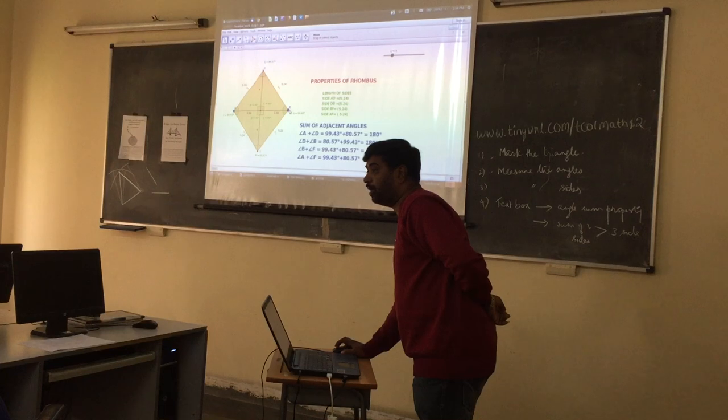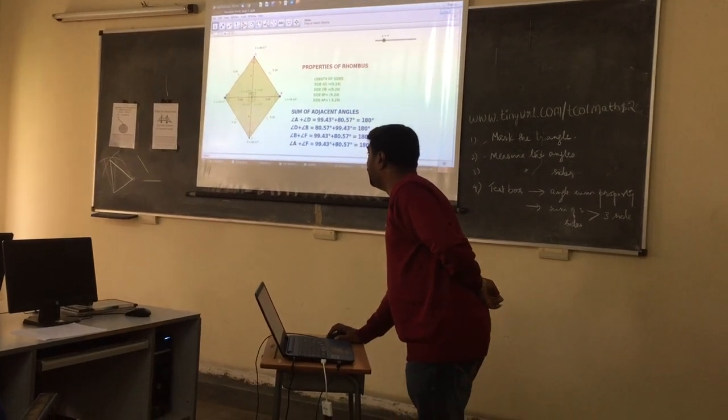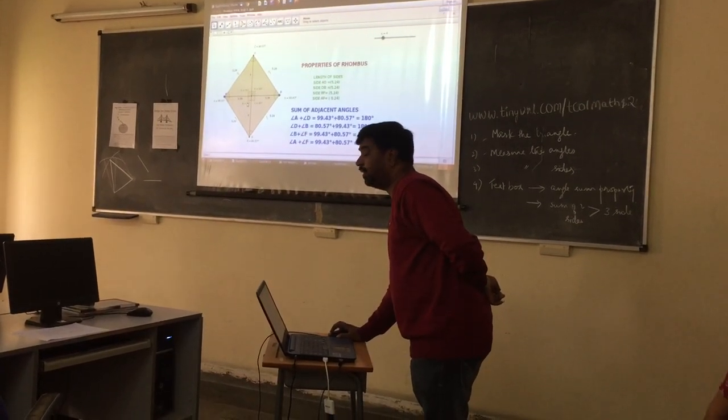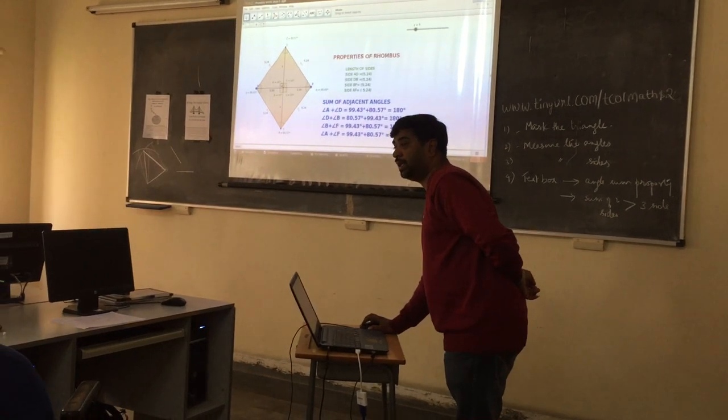Perpendicularly bisected. Perpendicular means here each angle makes 90 degrees. So we can see here each angle is equal to 90 degrees.